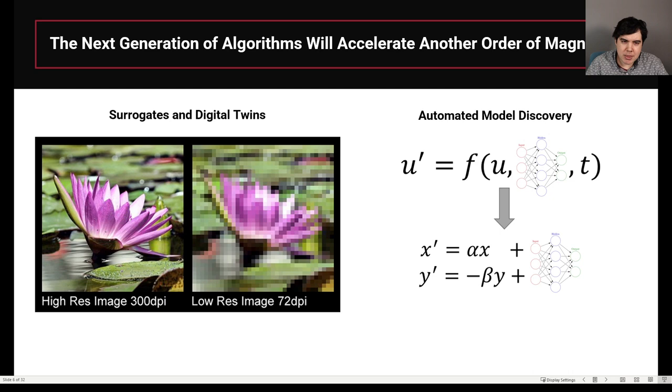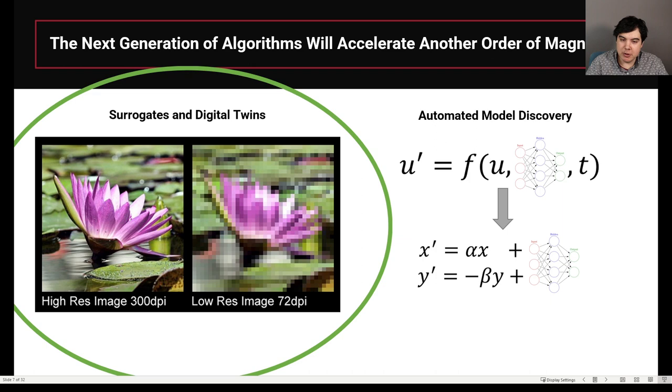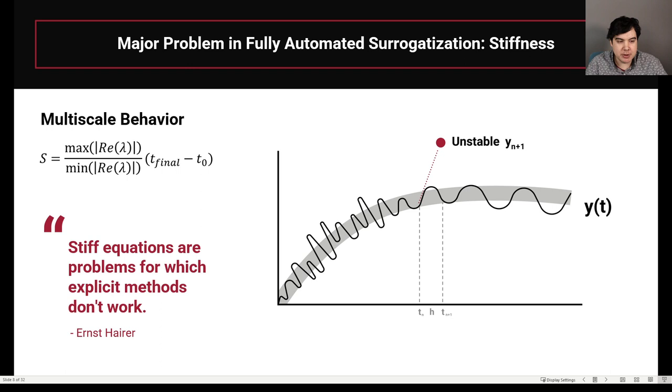What I want to talk about is how the next generation of algorithms will be able to accelerate our workflows by another order of magnitude. There's two different ways you can do this: using surrogates and digital twins to give you a similar model, which is lower resolution but gives you very high accuracy still, and accelerating the workflow itself by automating the discovery of models. Today I'm talking about the left side here of using surrogates and digital twins for acceleration. Check out my other talks on YouTube for more on automating model discovery using universal differential equations.